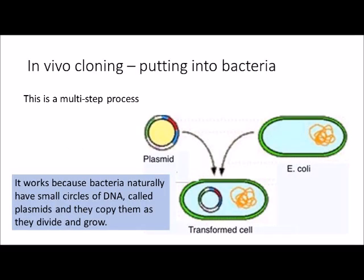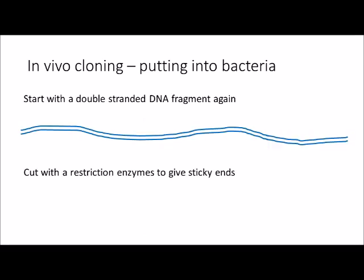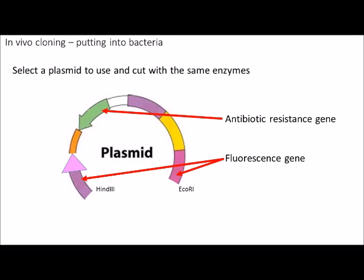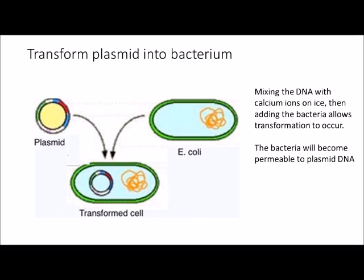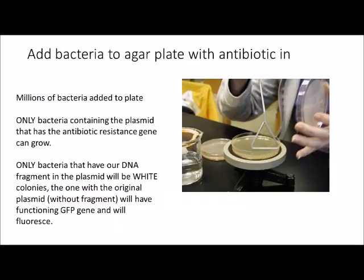The alternative method is in vivo cloning, using living organisms to make multiple copies of your fragment. We use bacteria through a process called transformation. Starting with our DNA fragment, we cut it with two different restriction enzymes to give it sticky ends. We then identify a plasmid — a small circular piece of DNA — and cut it with the same two enzymes. We insert our DNA into the plasmid using DNA ligase. We then perform transformation, which usually involves calcium ions and a heat shock to make the bacteria permeable to plasmid DNA.